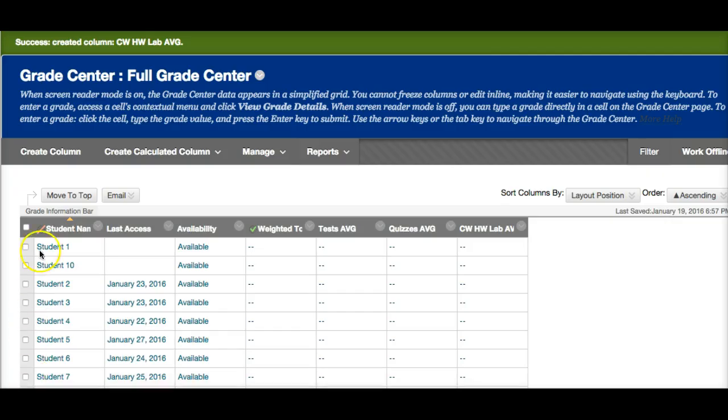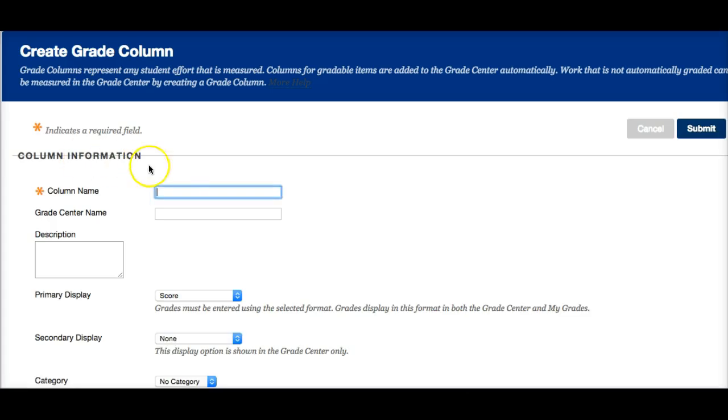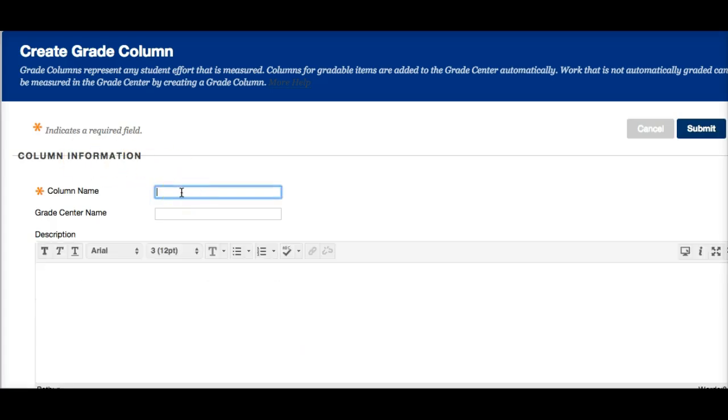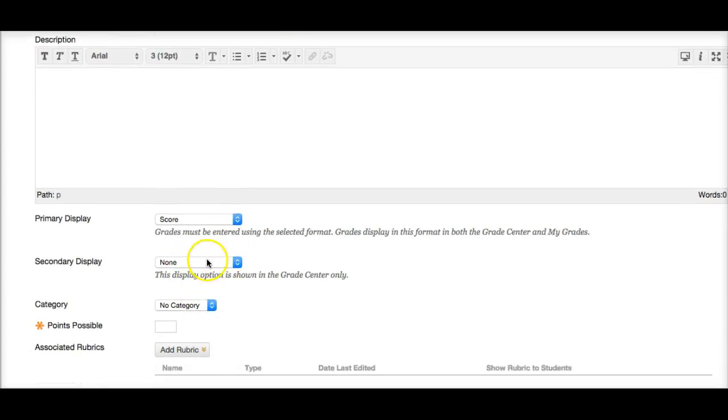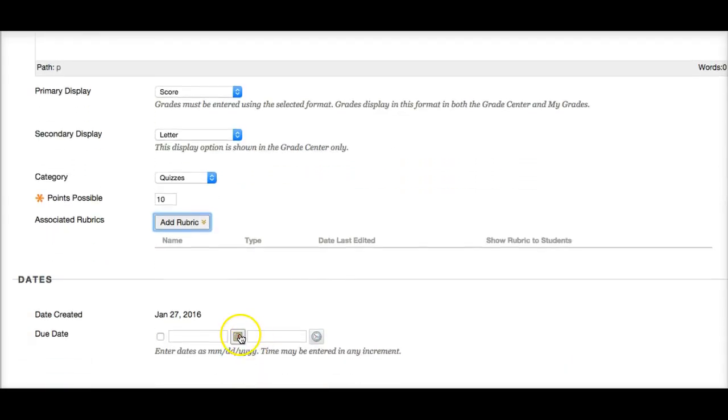So when I'm creating assignments, I typically use my syllabus and look at the grades that I have coming up. Go to create column. And a couple of things that I have coming up are quizzes. Quiz 1. Primary display: score. You can say secondary display: letter. Category. Now this is where you want to make sure this is a quiz. I need to make sure I click on the quiz category. Total possible points: 10.